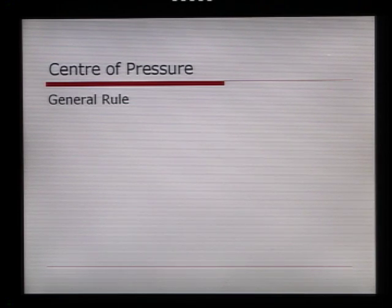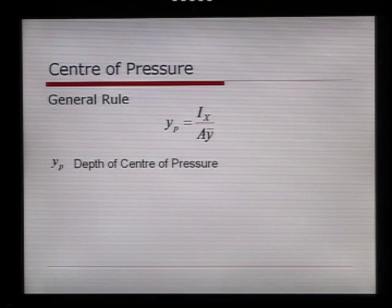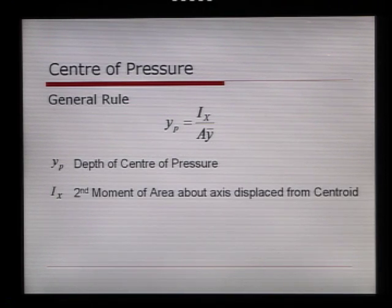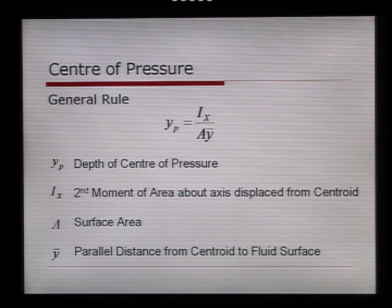A general rule to remember is that the point of action of the force equals ix over a y bar, where yp is the depth of the center of pressure. ix is the second moment of area about an axis displaced from the centroid, and this is a function of the shape. There's a shape function depending on whether the dam is triangular, circular, rectangular, or square. A is the surface area of the dam, and y bar is the parallel distance from centroid to fluid surface.